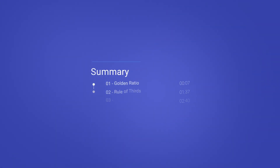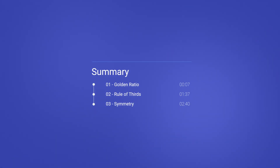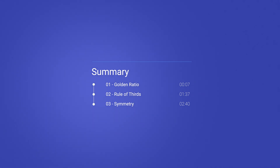So in summary, these are the three grids that I often use: the golden ratio, the rule of thirds, and symmetry on your slides. If you use any others, make sure to let me know in the comments down below. Thanks a lot for watching — I hope to see you in the next video.